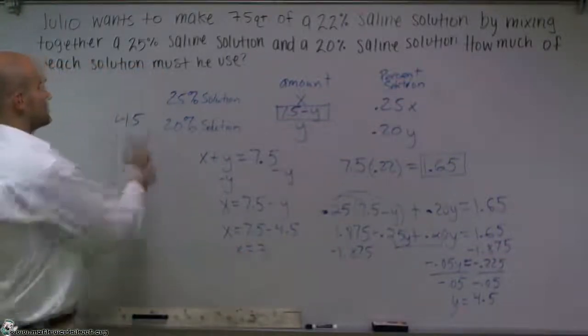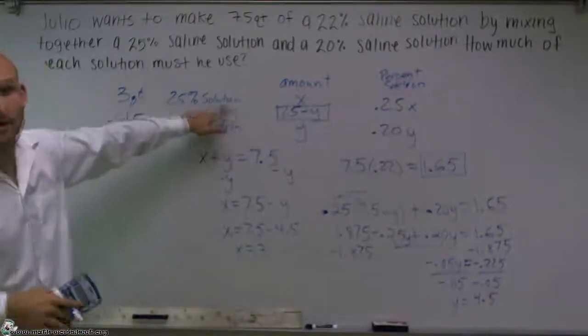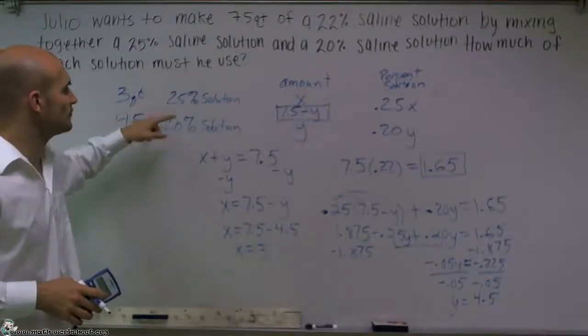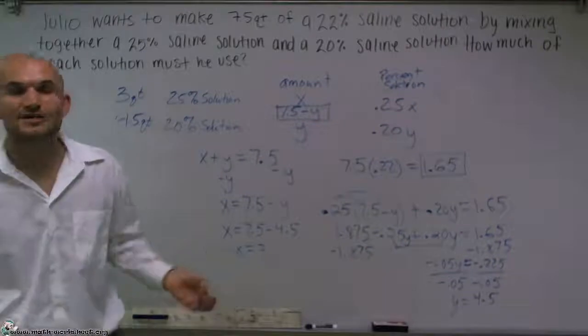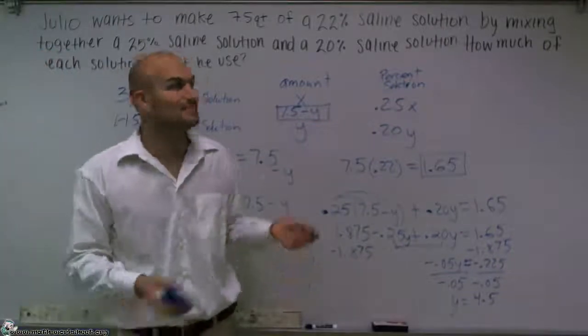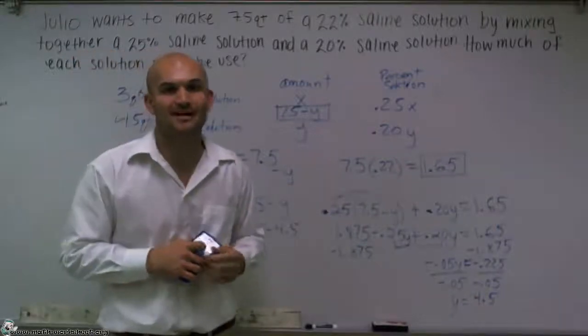So therefore, I'm going to use 3 quarts. I'm going to use 3 quarts of my 25% solution and 4.5 quarts of my 20% solution. So ladies and gentlemen, that's how you solve the mixture problem. When dealing like this, it is a little work for us, but hopefully that'll help you understand for you.